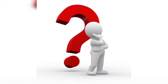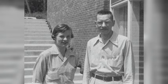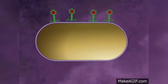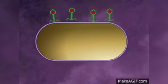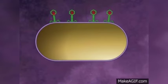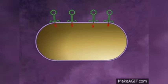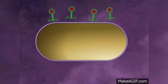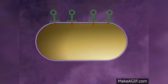The Hershey and Chase experiment answered this question by showing that on infection, most of the DNA entered the bacterium along with only a little protein. The bulk of the protein stayed on the outside.